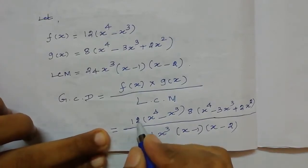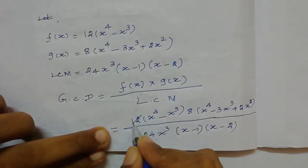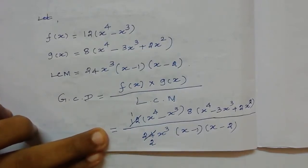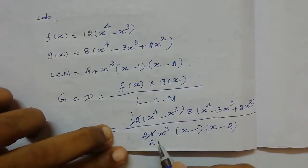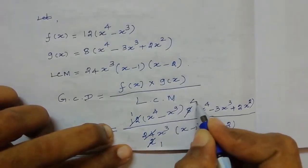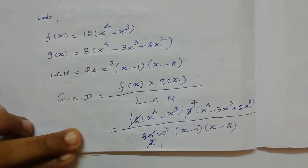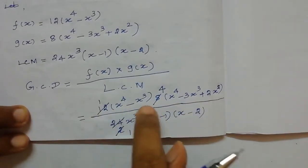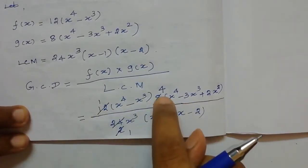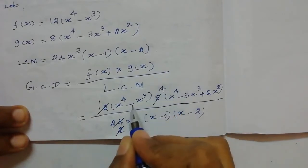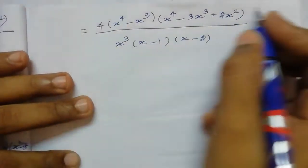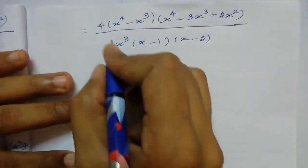The common factors are: 12 and 2 give 24 (so 2 × 12 = 24); after the number 8, 2 × 4 = 8. Now we write the remaining terms. In the numerator the remaining terms are 4 and the bracket values. In the denominator x³ and the bracket values remain.